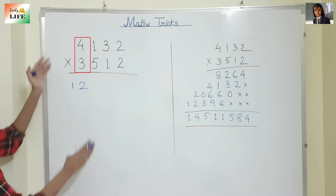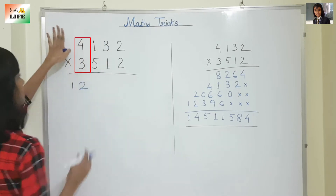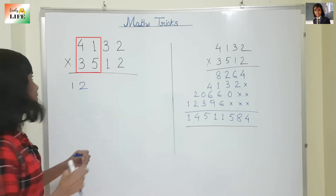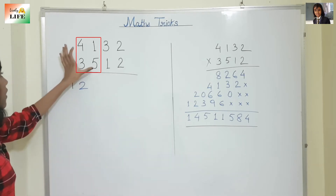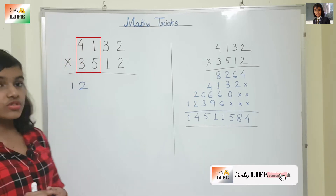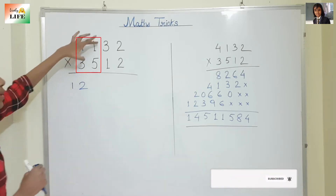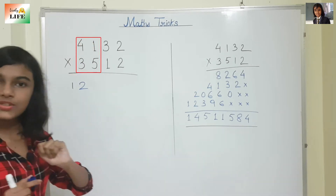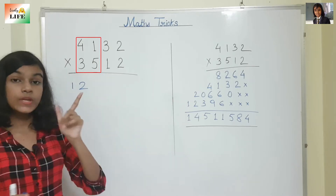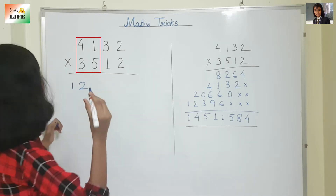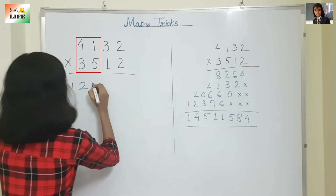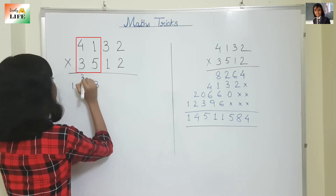Then we are going to move to the second column. Now we are going to cross multiply: 5 into 4, and 3 into 1. 5 fours are 20 and 3 ones are 3. So we need to add them. 20 plus 3 is 23. So we are going to write 3 and carry 2.